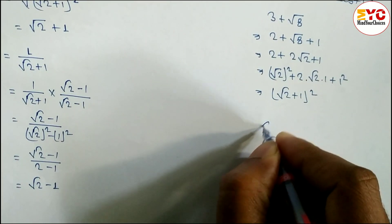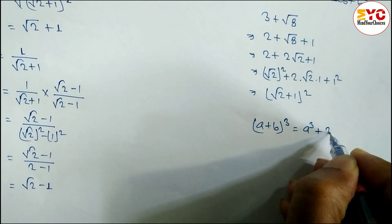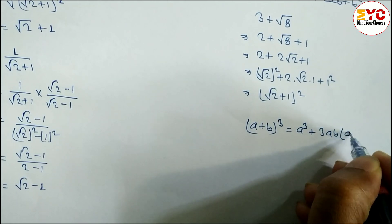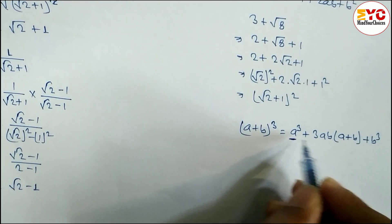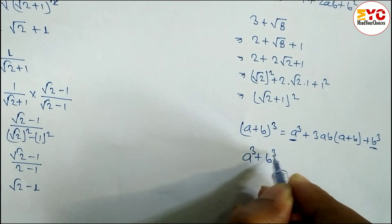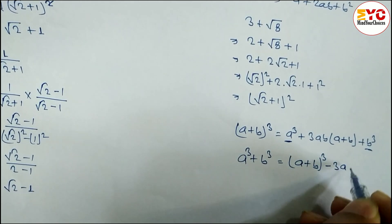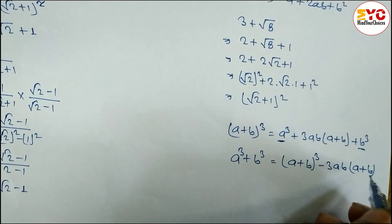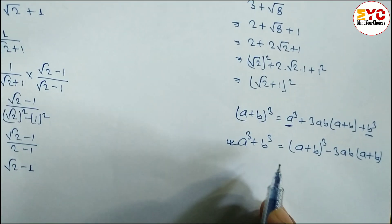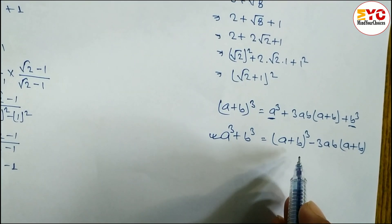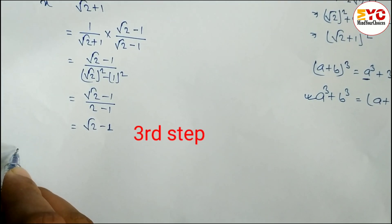Now I will show you the next formula. The formula of (a + b)³ is a³ + 3a²b + 3ab² + b³. From this we can derive: a³ + b³ = (a + b)³ − 3ab(a + b). We will use this formula because we have to find the value of x³ + 1/x³.